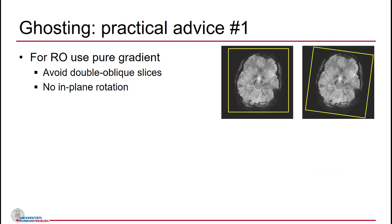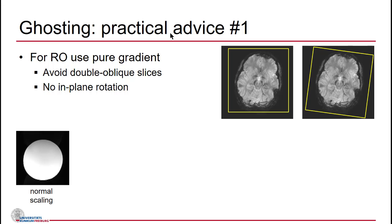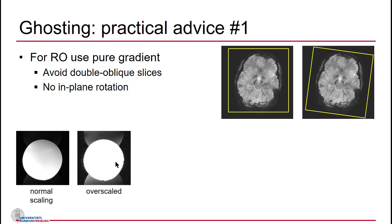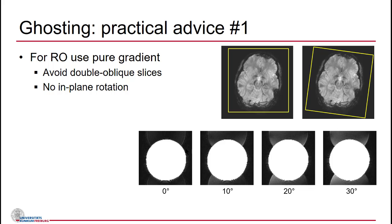On practical ghosting: one thing to avoid is using oblique orientations, because if you use very strong gradients, delays on different axes can be different. If you mix them, this mixes your delays. I measured a phantom rotating slices around it, and overscaling the image shows that ghosting level changes a lot depending on orientation — even a 10-degree rotation can produce unacceptable ghosting. The message is: use standard orientation of slices if your application allows, and try to avoid in-plane rotations or double oblique slices.